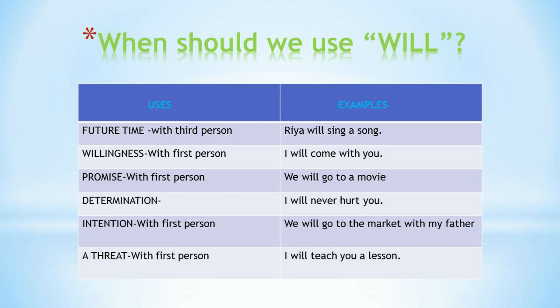For willingness: 'I will come with you.' For promise: 'We will go to a movie.' For determination: 'I will never hurt you.' For intention: 'We will go to the market with my father.' For threat: 'I will teach you a lesson.' So with the first person, 'will' expresses willingness, promise, determination, intention, and threat.